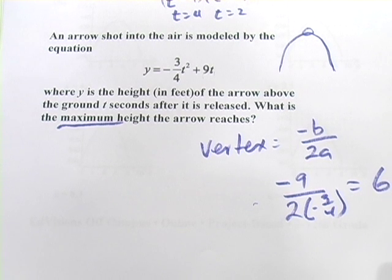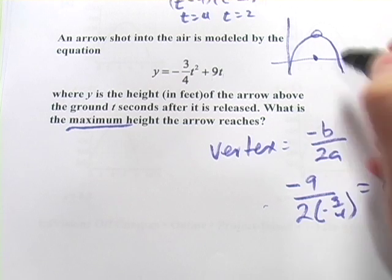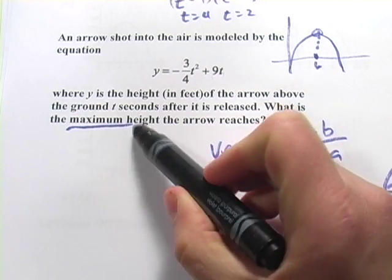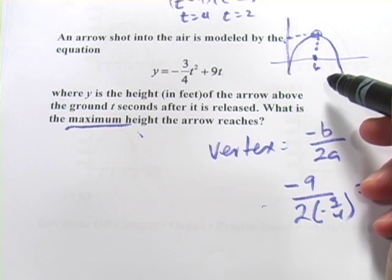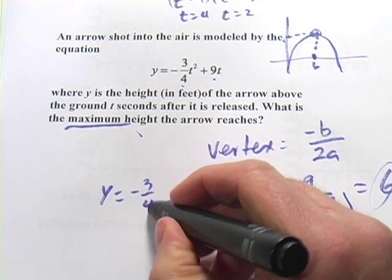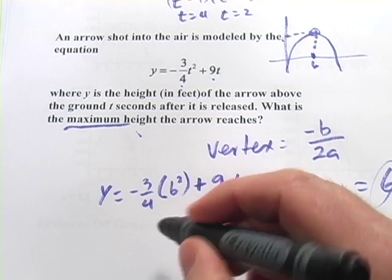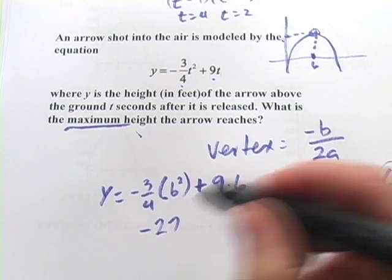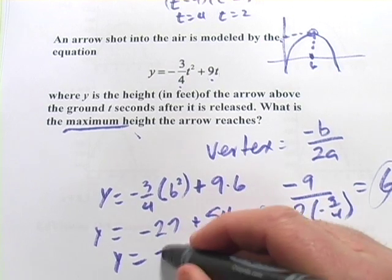So our x-coordinate is positive 6. But let's think about what this means on our graph. Here's x and y. The 6 is right here. And so this point that the vertex occurs is when x equals 6. What they're asking is, what's the height? Well, that's going to be our y value here. So we need to find y at this point where x or t equals 6. So what we're going to do is take that 6 and plug it back in up here. So this is going to be y equals negative 3 fourths times 6 squared plus 9 times 6. So 6 squared is 36. Divide that by 4. You'd get 9 times 3. So that's a negative 27. And a 9 times 6 is a 54. So y equals 27.